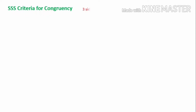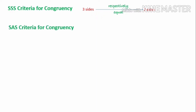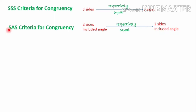Before starting the session let's recall the four congruency criteria. The first is SSS criteria: three sides of one triangle are respectively equal to the three sides of another triangle, then the two triangles are congruent. Here S stands for side. The second is SAS criteria: two sides and the included angle of one triangle are respectively equal to two sides and included angle of another triangle, then the two triangles are congruent. Here S stands for side and A stands for angle, and the angle is included between the sides — that's why it is called the included angle.